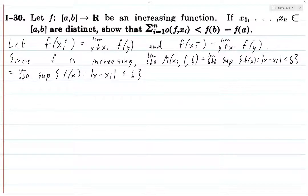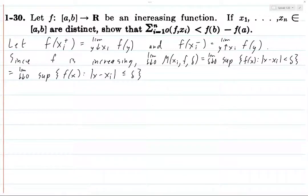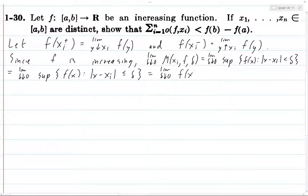However, when we take this limit, we can take δ/2, and then we'll be discarding that f(x_i + δ). Any additional points introduced which could possibly increase the value are eventually disregarded as you take the limit as δ goes to zero. Therefore these two sets in the limit are equal, and we can replace what's inside with f(x_i + δ) because f is an increasing function.